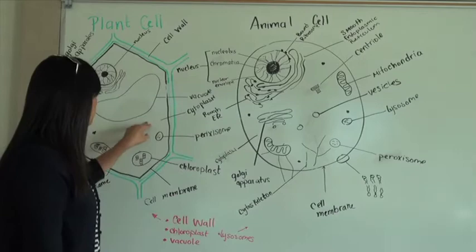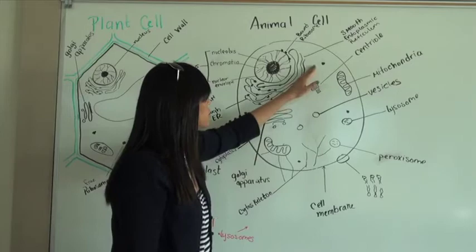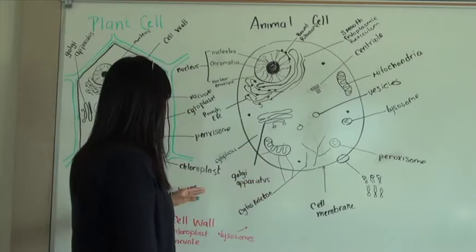The fluid between both of these is called the cytoplasm. The cytoplasm is pretty much all the fluid area and the stuff between them. It's not dry, it's all in liquid, so that's our cytoplasm.